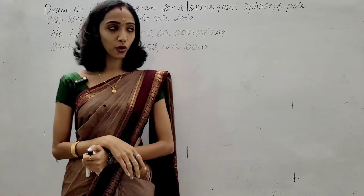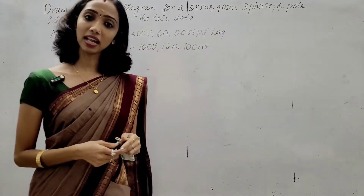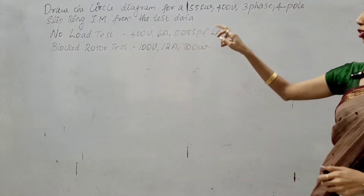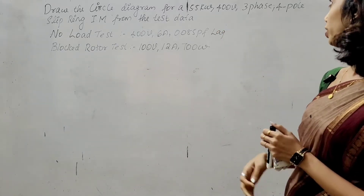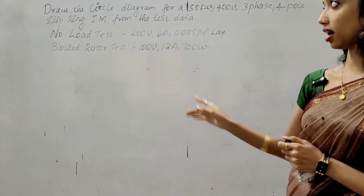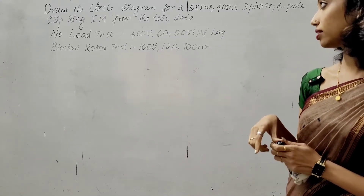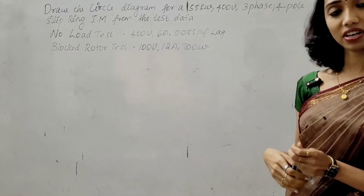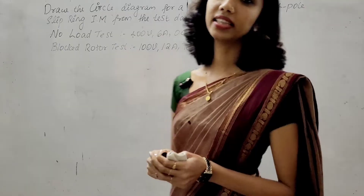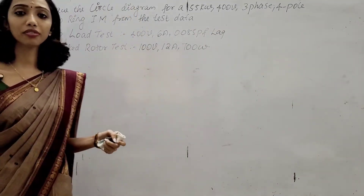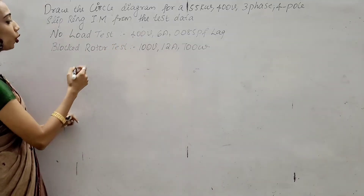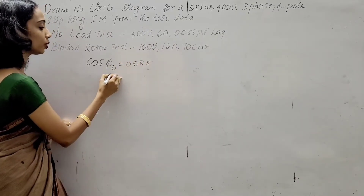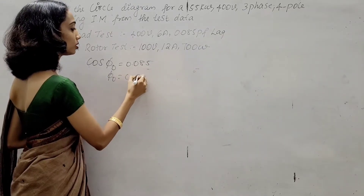I am going to show you the details for the circle diagram for a 5.5 kW, 400 volt, 3-phase, 4-pole slip ring induction motor. From the test data: no-load test — 400 volt, 6 ampere, 0.085 power factor lag; block rotor test — 100 volt, 12 ampere, 700 watt. Now we calculate φ₀: cos φ₀ = 0.085, so φ₀ = cos⁻¹(0.085).